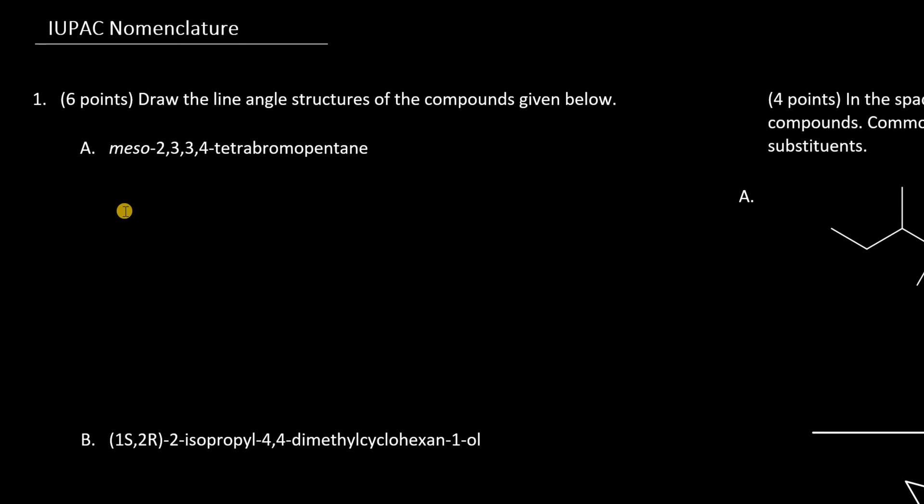So with 1A, we have meso-2,3,3,4-tetrabromopentane. In order to systematically approach the problem, let's break it up into pieces. Let's forget about 2-3-3-4, let's forget about meso, we'll tackle that later, and just focus on the parent compound, which is pentane. So let's draw pentane.